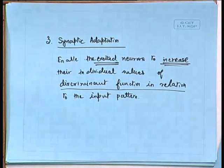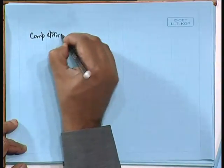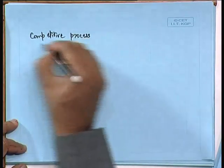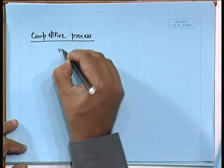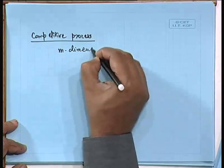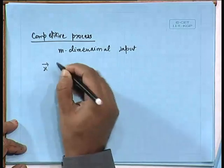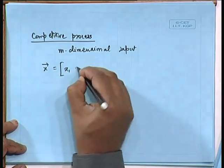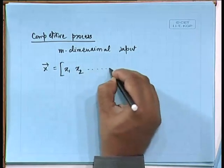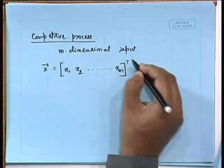Now let us go over to the mathematical modeling of the competitive process. We consider an m-dimensional input, so the input vector x is given by [x₁, x₂, ..., xₘ]ᵀ.